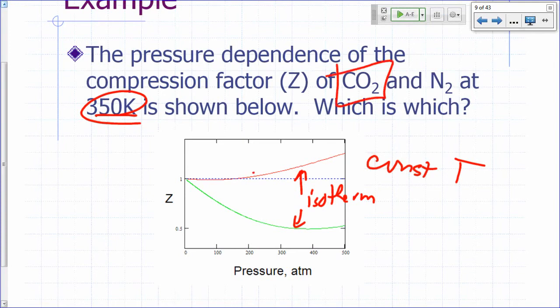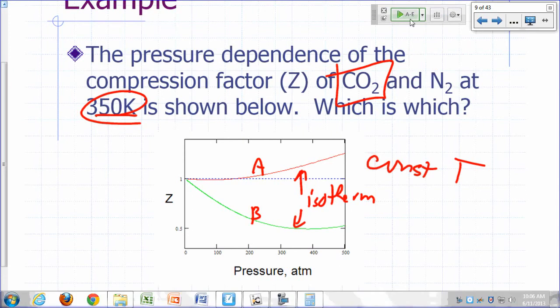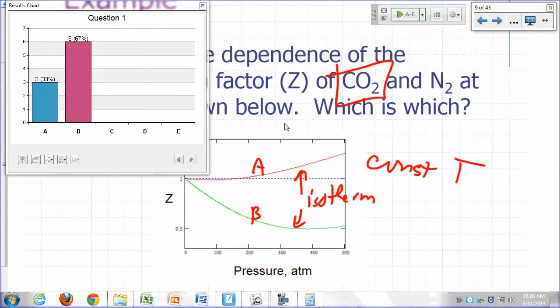So, which one is carbon dioxide and which one is nitrogen? Let's just say which one is carbon dioxide? Is it A or B? That's a one-third, two-thirds split, huh?